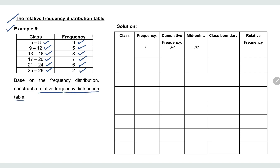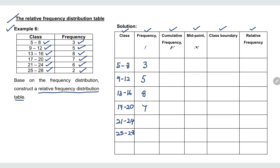To construct the relative frequency distributions table, you must have class frequency, cumulative frequency, midpoint, class boundary, and relative frequency. For the class column, copy from the previous table: 5–8, 9–12, 13–16, 17–20, 21–24, and 25–28. For the frequency column, also copy from the previous table: 3, 5, 8, 7, 6, 2. The summation of frequency is 31.